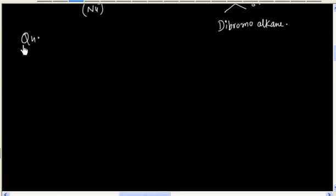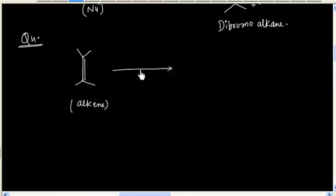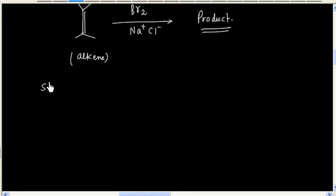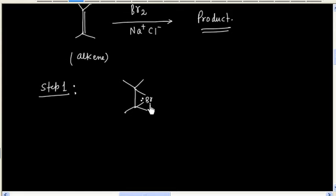Now let us consider this reaction. We have an alkene reacting with bromine, and the solution also contains NaCl. What will be the product in this reaction? Step 1 is again the same — we will have a cyclic bromonium ion formed as an intermediate.